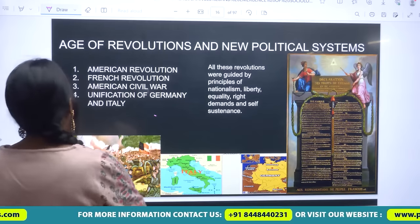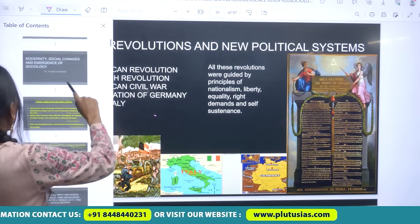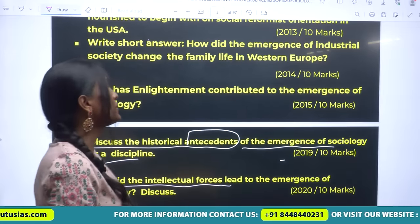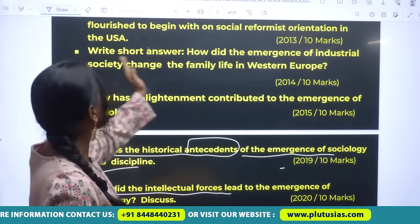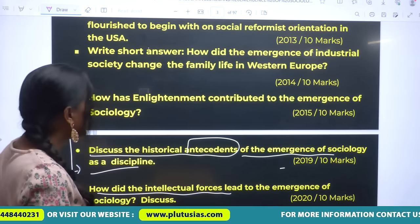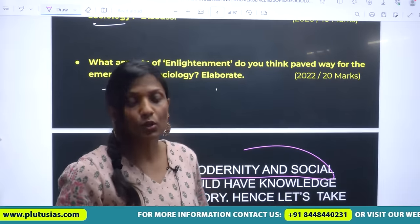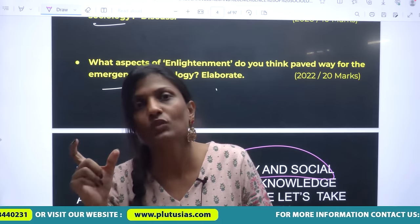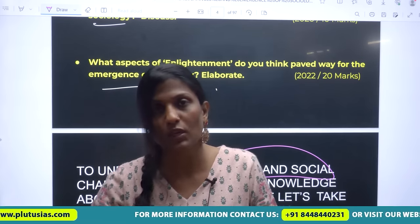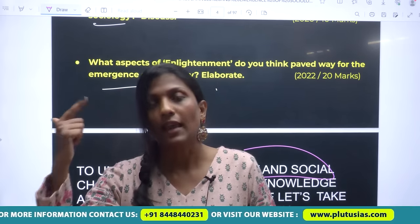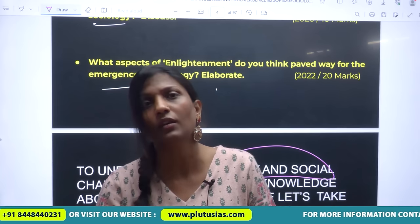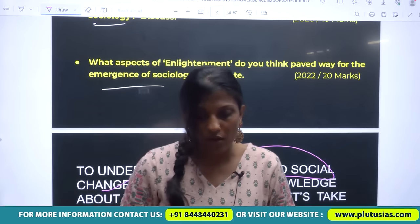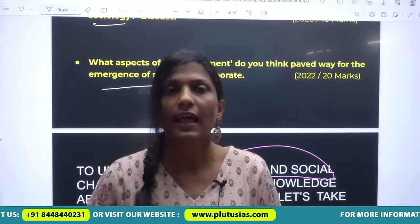For this particular topic, you have seen that UPSC has asked many times questions about how intellectual ideas led to the development of sociology, how enlightenment contributed to the emergence of sociology, and how the industrial society changed the family in Western Europe. To conclude, for topic one, you must have an understanding of world history. Then you need to understand all those factors responsible for the development of sociology: Renaissance, enlightenment, revolutions like the French Revolution in particular, and then the Industrial Revolution. If you are writing on these events, you are addressing the demand of the question, and I believe you will get good marks.